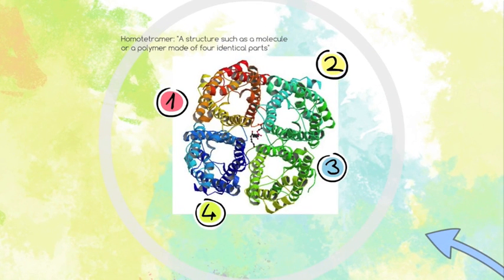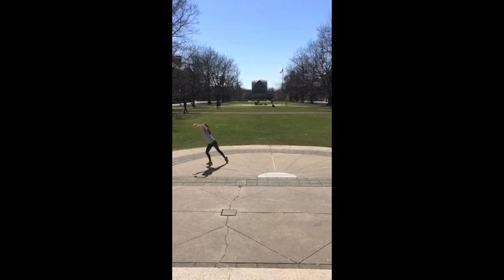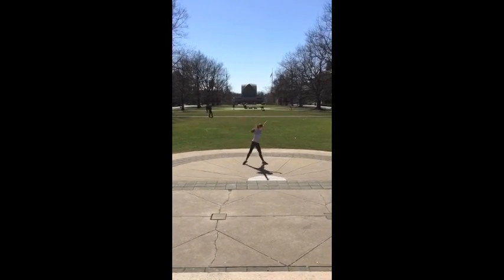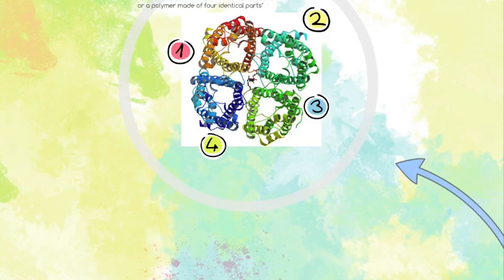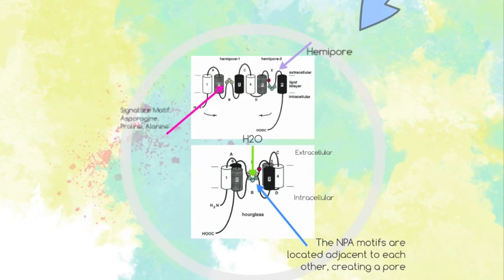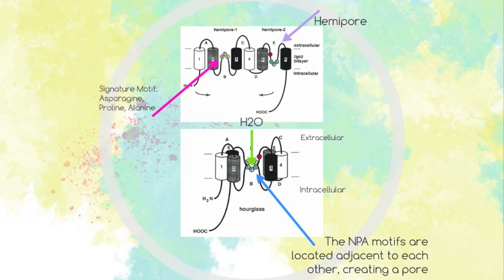Aquaporins are homotetramers, each comprising four identical subunits. The primary sequence of each subunit is actually two sets of the same sequence in tandem. Each half contains three transmembrane alpha helices. A small loop connects the first and second, and a larger loop, referred to as a hemipore, connects the second and third.